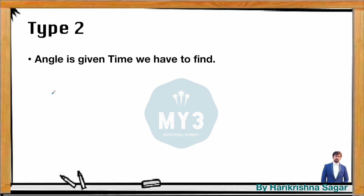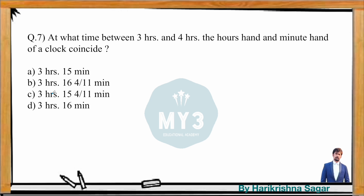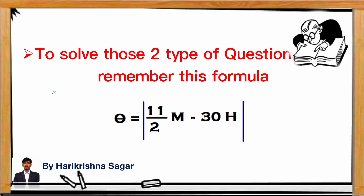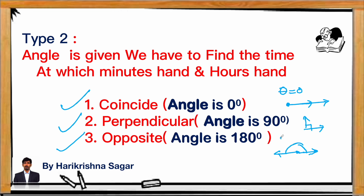Now Type 2 questions: the angle is given and we must find the time. Three common angles are given: coincide (angle = 0°), perpendicular (angle = 90°), and opposite (angle = 180°). Instead of a direct angle value, the question states when hands will coincide, be opposite, or be perpendicular.